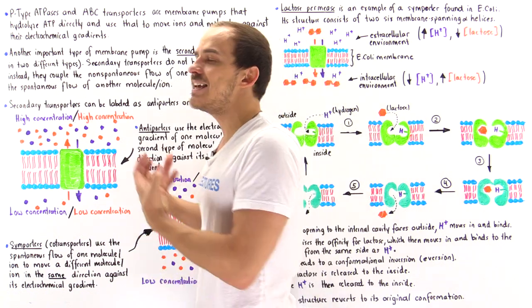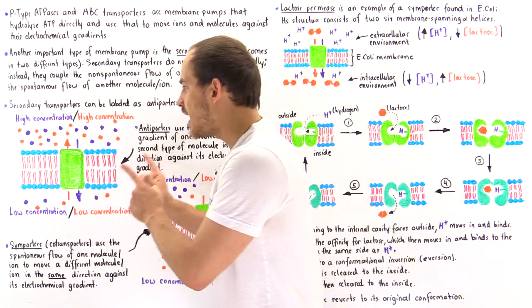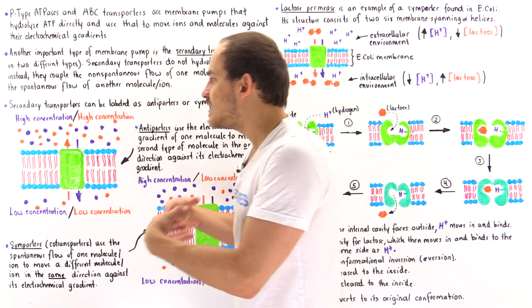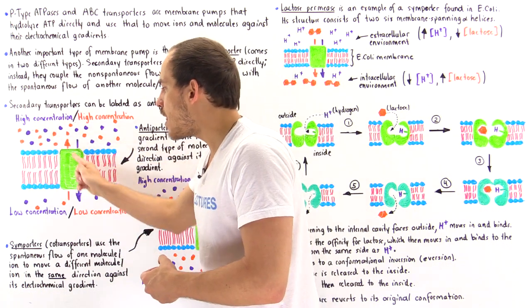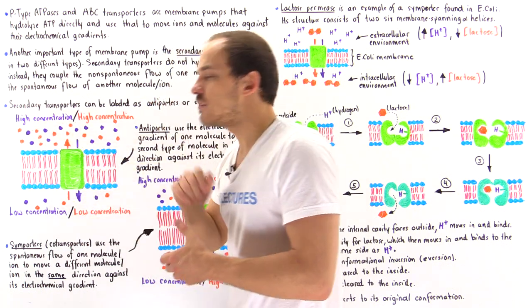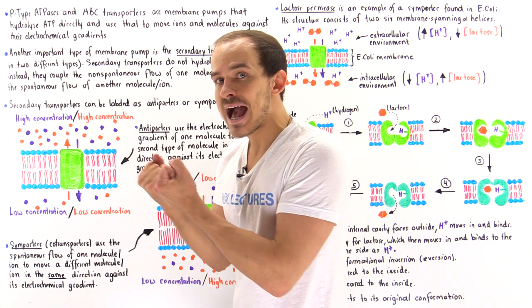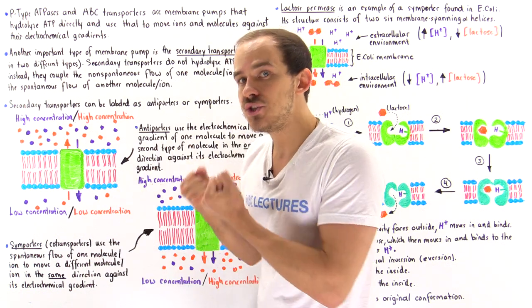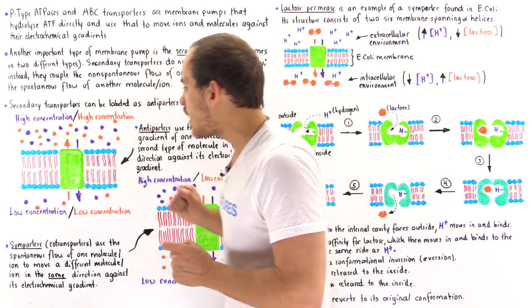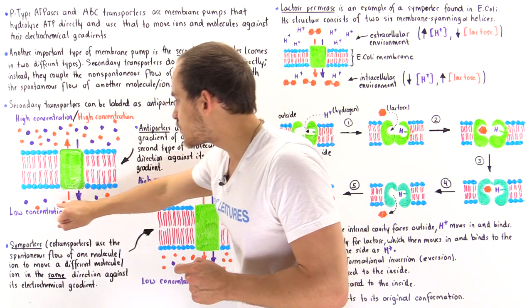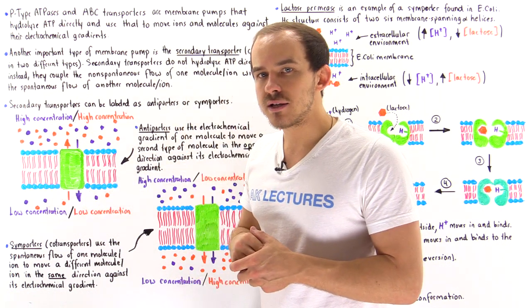In fact, it gives off energy. That free energy released when the purple molecules move down their electrochemical gradient is captured and is used to move these other molecules — the orange molecules.